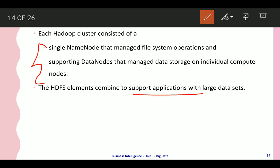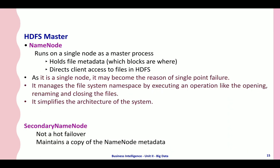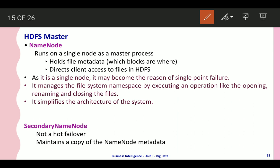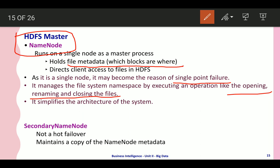HDFS elements combine to support applications with large data sets. The HDFS master — the name node — directs client access to files in HDFS. As it is a single node, it becomes the reason for a single point of failure. It manages the file system namespace by executing operations like opening, renaming, and closing files, which simplifies the architecture of the system.